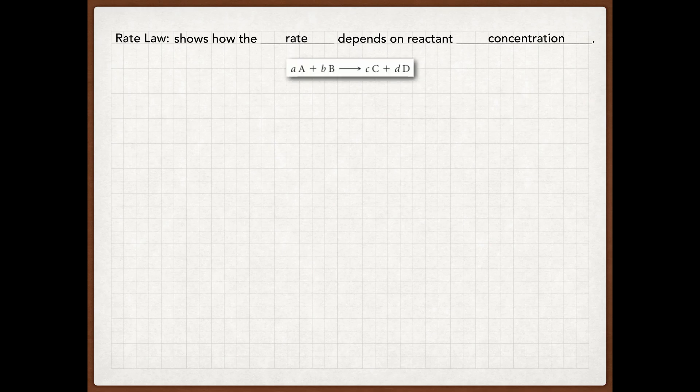So if I show you this generic reaction right here, this is an example of a rate law. Rate equals k, which is your rate constant, times your concentration of A raised to the m, times B raised to the n. M and n, we call those the order. So if A is first order, then that m would be a one. If A is second order, that m would be a two.